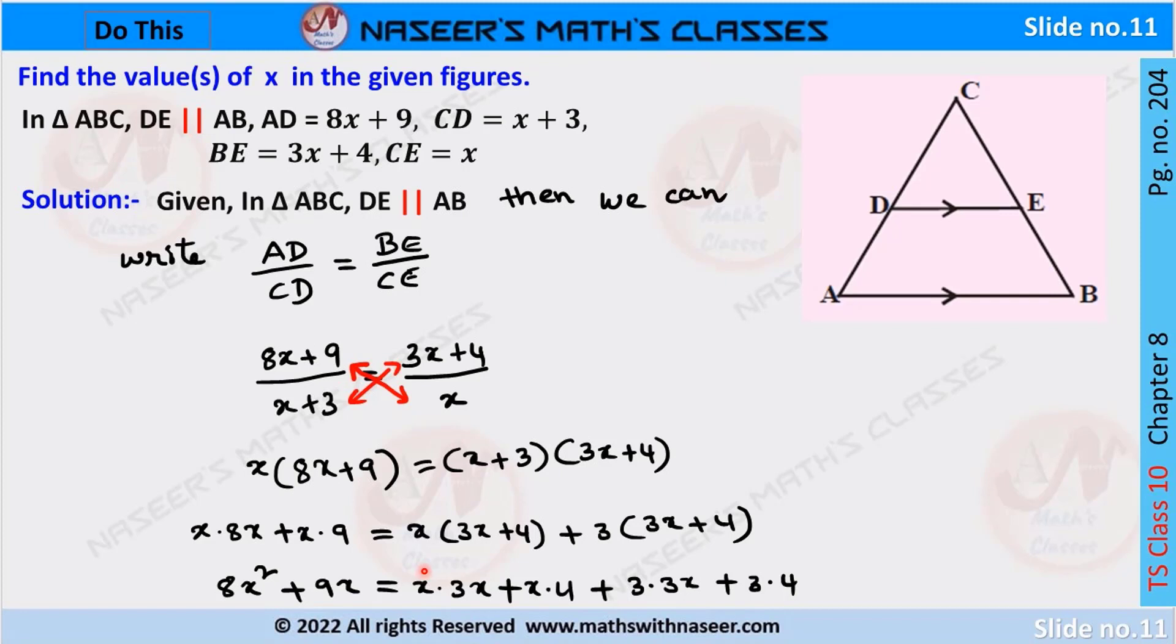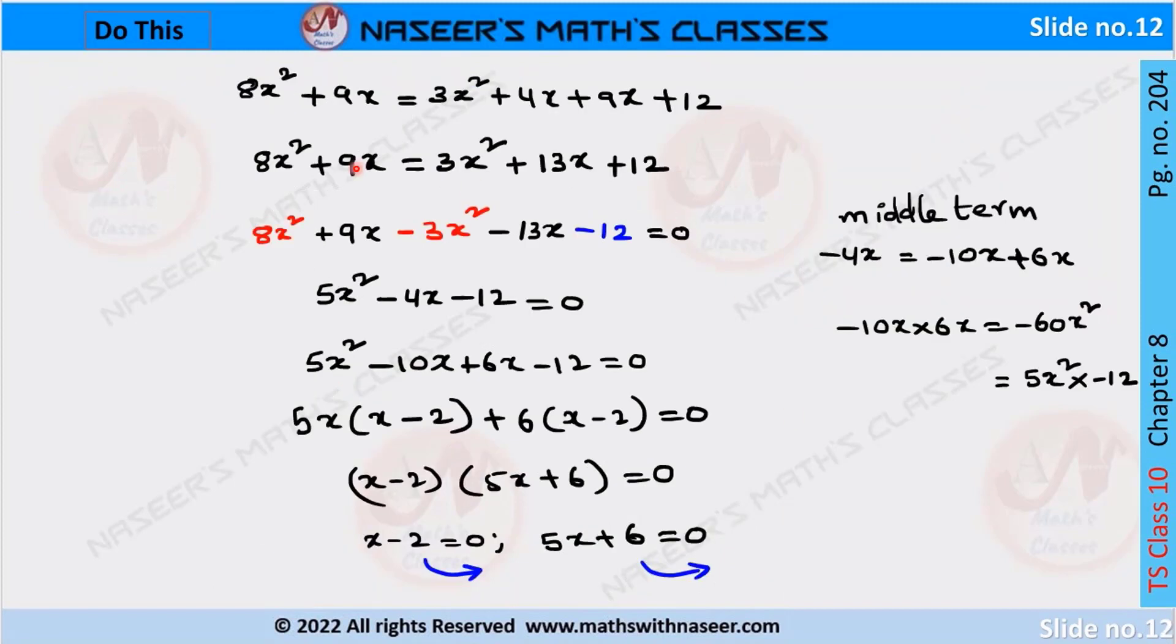By applying the distributive law, X into 3X plus X into 4 plus 3 into 3X plus 3 into 4. After multiplication, it can be written as 8X squared plus 9X equals 3X squared plus 4X plus 9X plus 12.